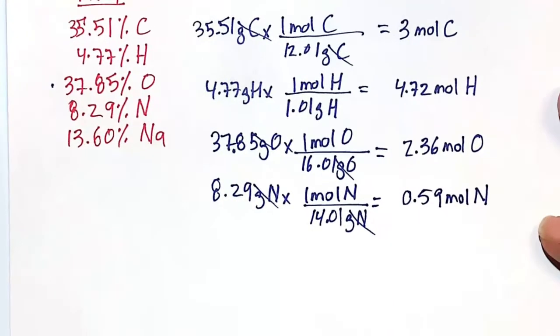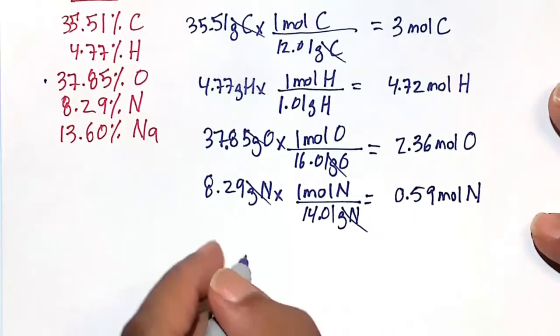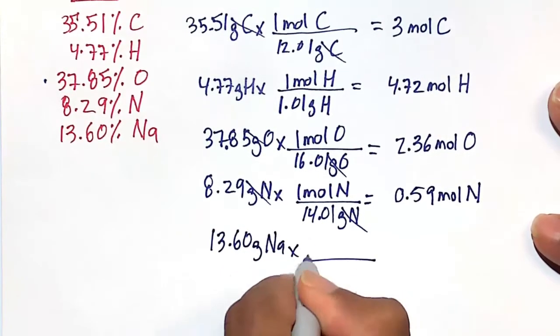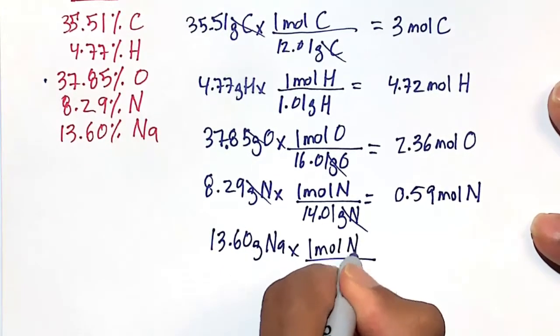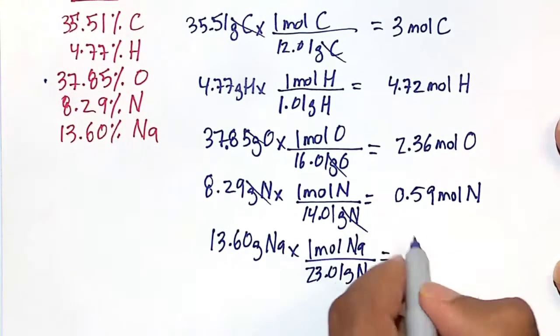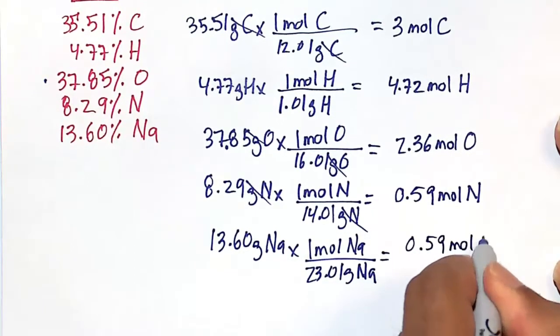And then finally, we have 13.6 grams of sodium, and for every one mole of sodium, there is 23.01 grams of sodium. And this is also 0.59 moles on my calculator.